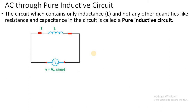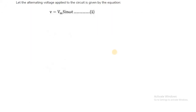In this pure inductive circuit, the voltage applied is V equal to Vm sin omega t, providing the current I to the value of an L Henry inductor. The applied voltage in the circuit is V equal to Vm sin omega t, and the inductor L is the coil.